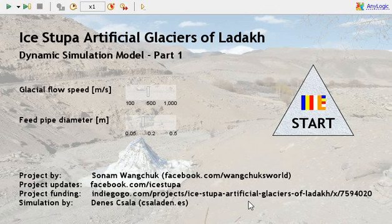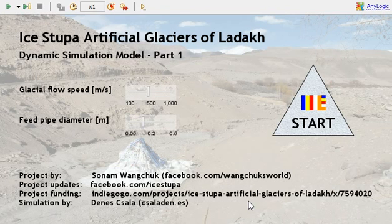Please follow the link in the description for an introductory video about the project. This is part one of a series of models demonstrating how temperature will affect the growth and shrink of the artificial glacier, which will be essentially a conic ice mountain.